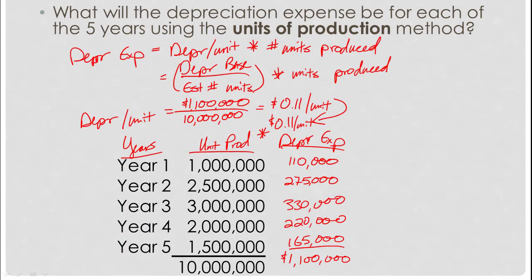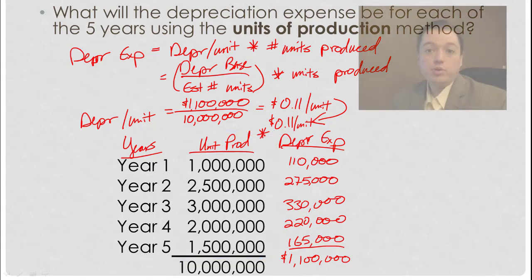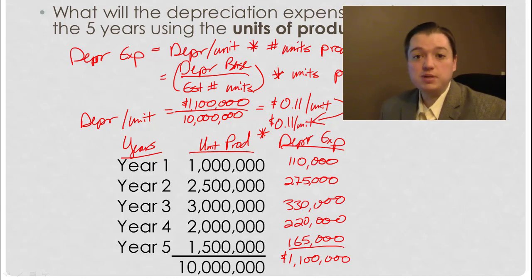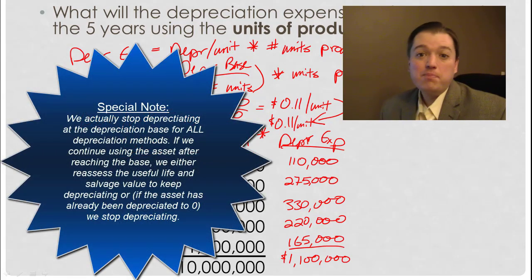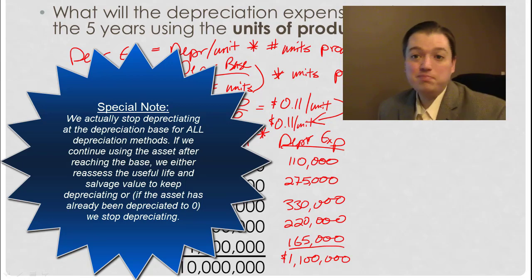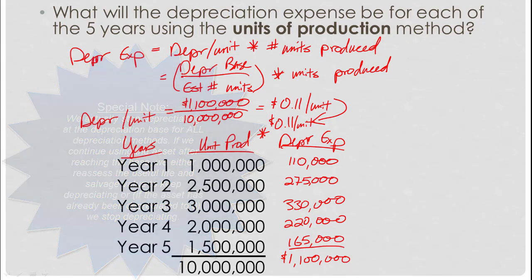Here are the numbers — we're just assuming this is what they actually produced each year, up to 10 million units total. One important thing to remember with units of production: once you've made the 10 million units you assumed you were going to make, you simply stop depreciating. You can't go beyond your depreciation base. If you get to the end of year five and you're still producing units strongly, you may change your estimates, or just keep using the asset — especially if you've depreciated it all the way down. But once you've depreciated the whole depreciation base, you stop.